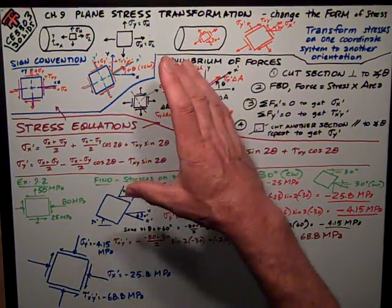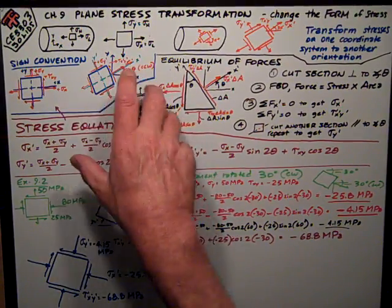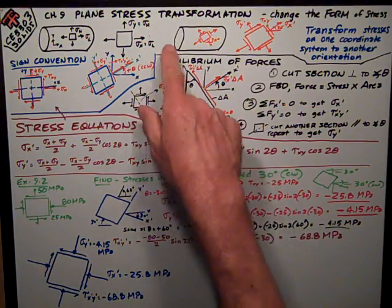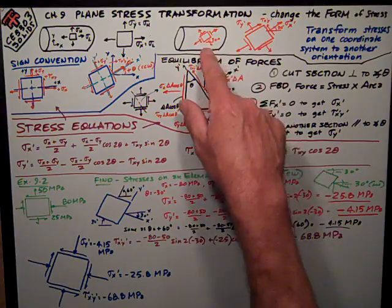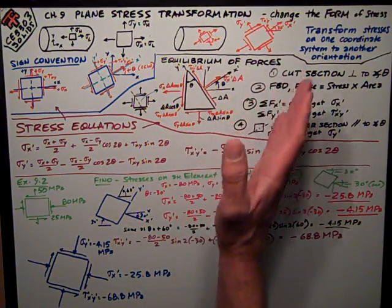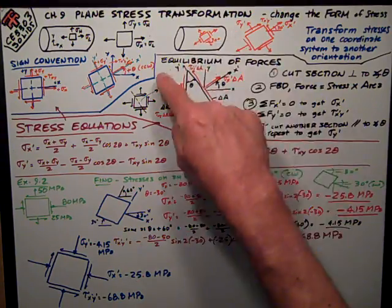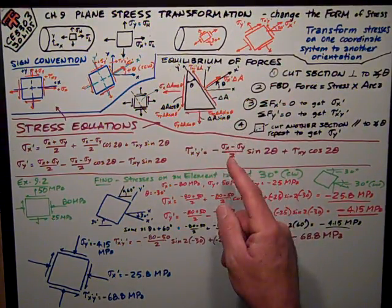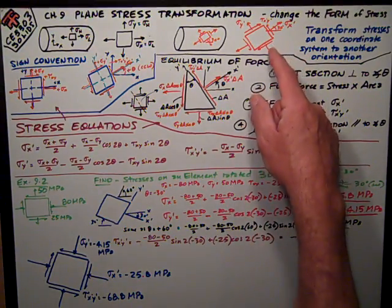But we may want to find the stresses on another orientation, another element oriented at a different angle. And so we might say at an angle of 30 degrees from the horizontal rotated counterclockwise. So what are the stresses parallel to that line and perpendicular to that line? And so we need to be able to figure those.